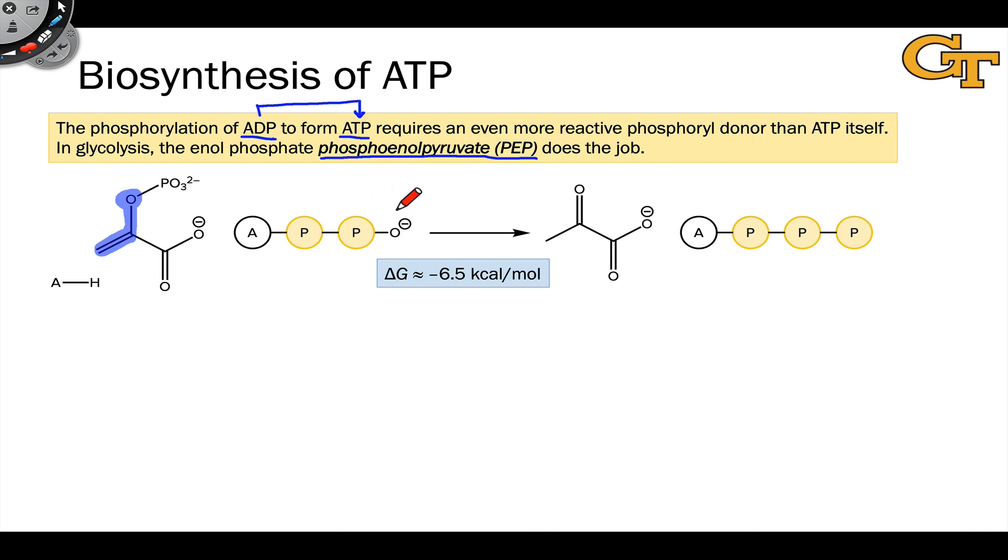The basic idea of the phosphorylation of ADP with PEP is that the terminal anionic nucleophilic oxygen of ADP attacks the electrophilic phosphorus atom in phosphoenolpyruvate.